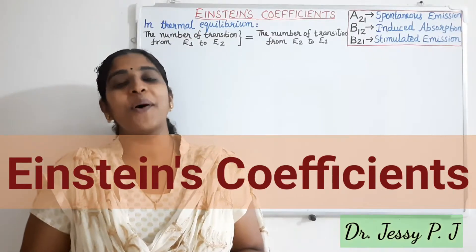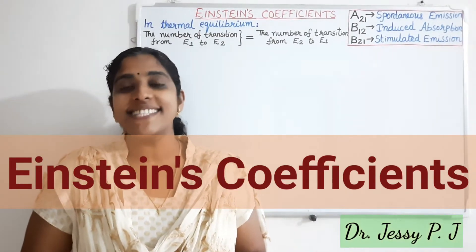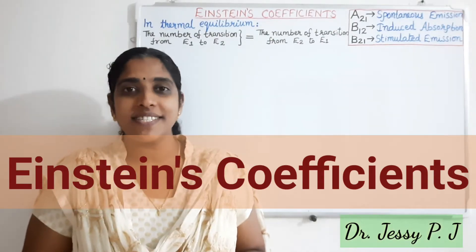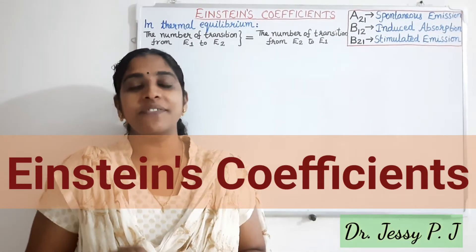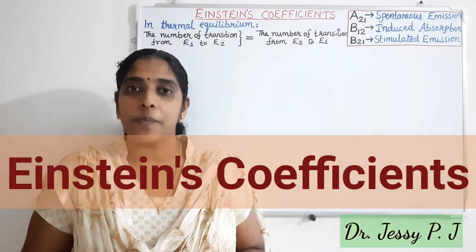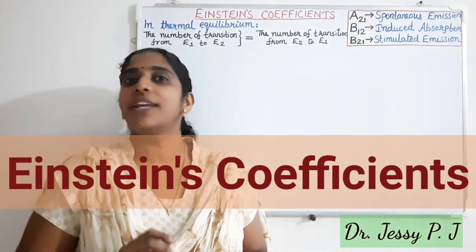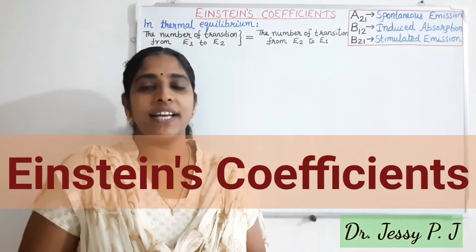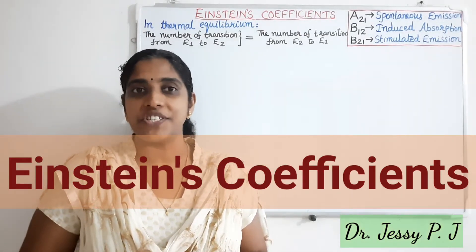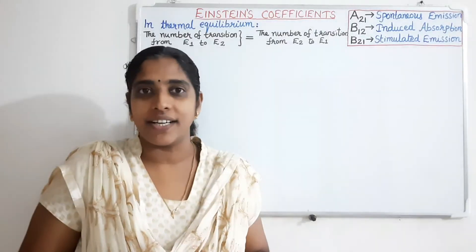Hi everyone, today we are going to discuss about Einstein's coefficients. In the last video, we have seen about lasers. In that, we discussed three types of processes: absorption, spontaneous emission, and stimulated emission. There, we defined three constants known as Einstein's coefficients — A21, B12, and B21.